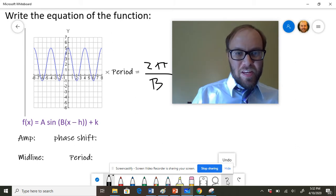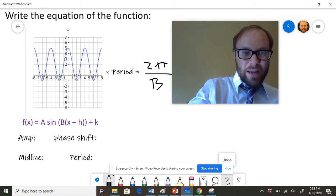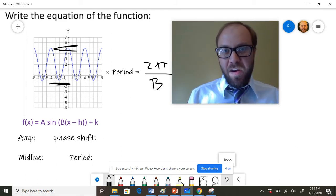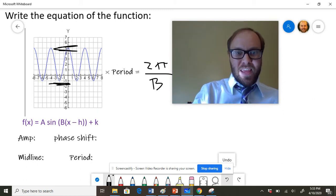All right, so some other things here. Notice that the function goes down to negative one and it goes up to five, so we've got to figure out where the midline is. If we can figure out where the midline is, it's also very easy to find the amplitude.